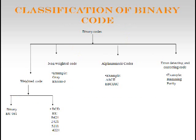Binary codes are classified into four types: weighted codes, non-weighted codes, alphanumeric codes, and error detecting and correcting codes. Weighted codes are classified into binary and BCD; examples of BCD are 8421, 2421, 5211, and 42-1-2-1. In weighted codes, each bit position is given a particular weight — for example, weights of 1, 2, 4, and 8 for the respective positions.